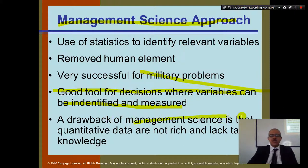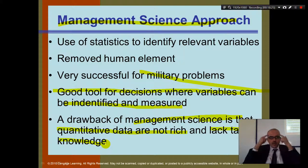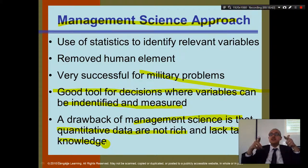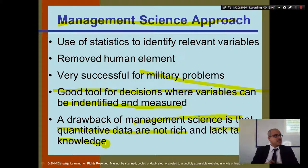However, management science has a big drawback: it is completely quantitative data, which is not always rich, and sometimes lacks tacit knowledge. There is information in people's minds that is not captured in numbers. Statistics and data can be inaccurate or incomplete. You need to use the knowledge that exists in people, not just numbers, because sometimes the numbers are missing entirely.